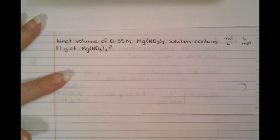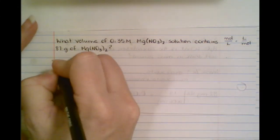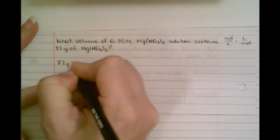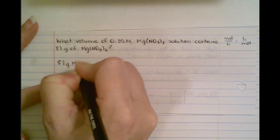So we want to find a volume. So I know I need to go ahead, like always, start with the 87 grams of MgNO3.